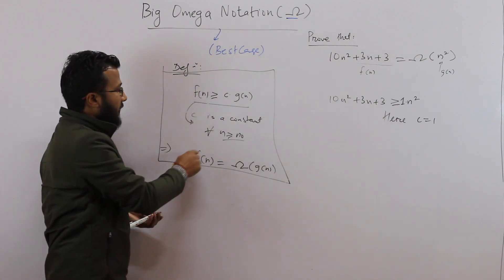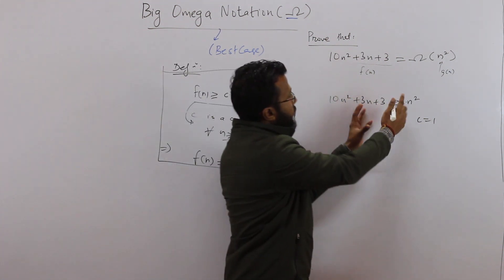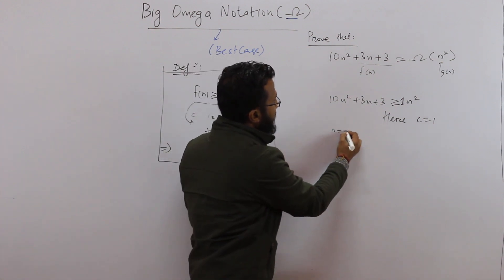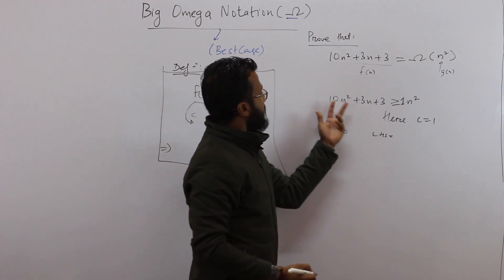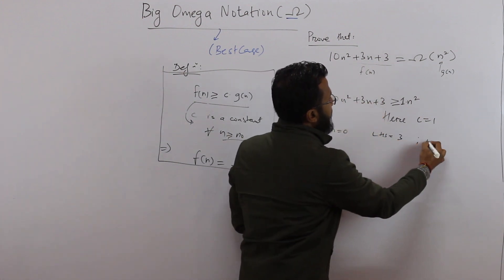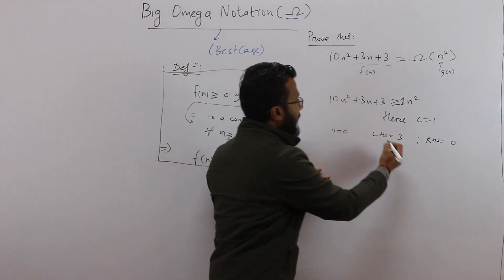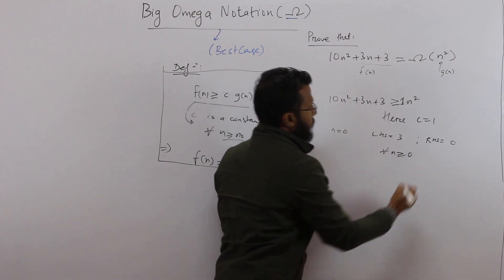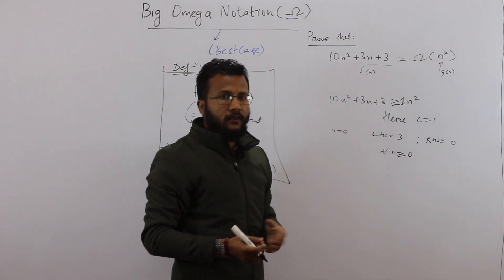Now with c = 1, I need to find the value of n naught, since the definition requires it. Is this inequality true for all values of n? If n = 0, the left hand side becomes 3 and the right hand side is 0 — this is true. So this is true for all values of n greater than or equal to 0.